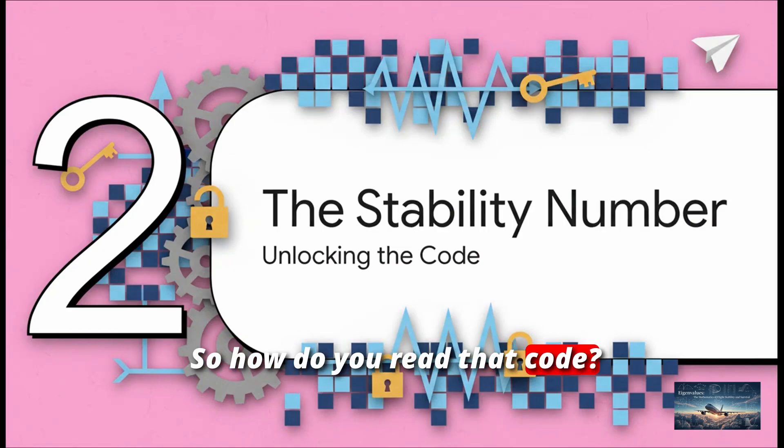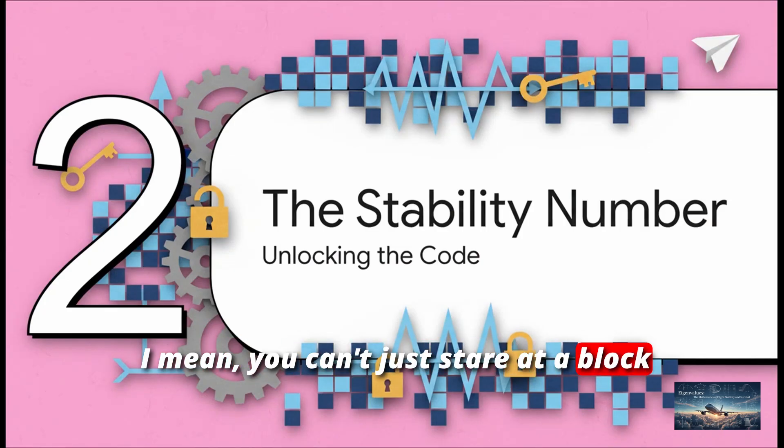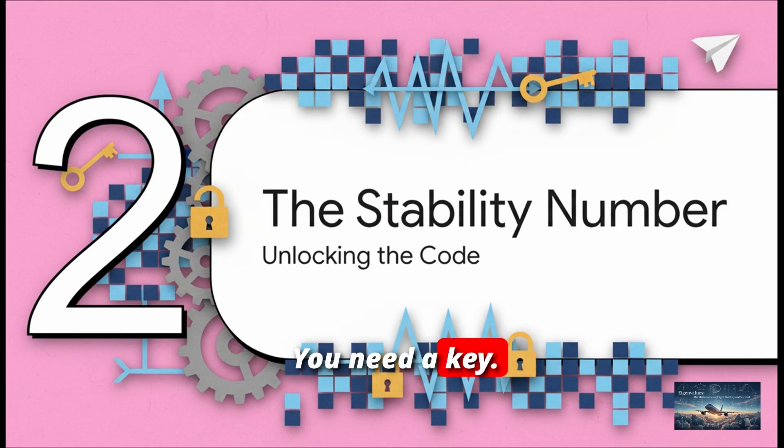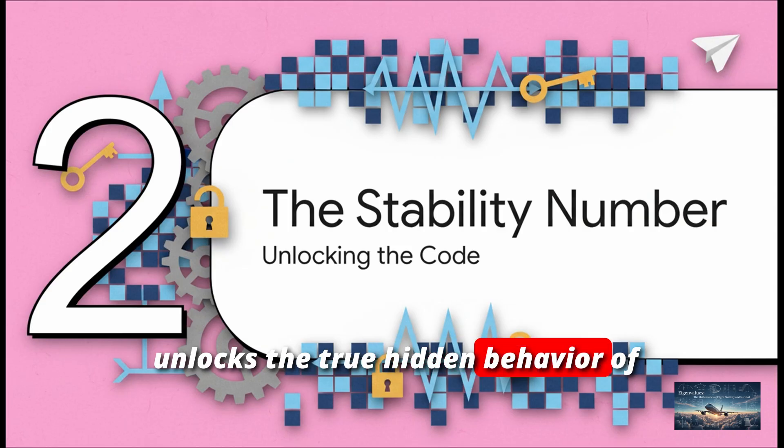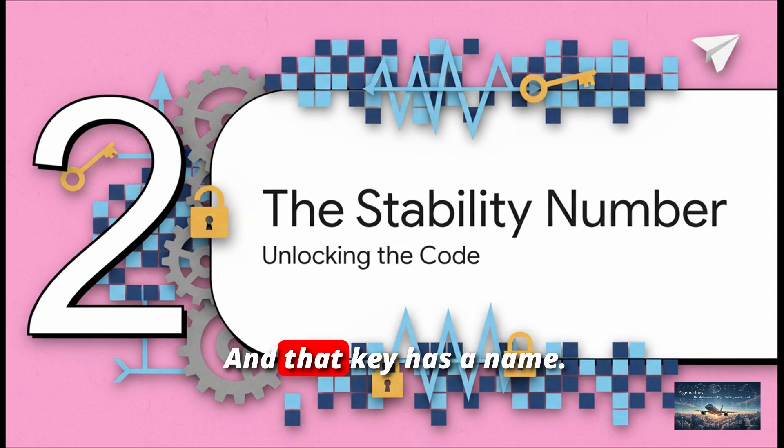So, how do you read that code? I mean, you can't just stare at a block of numbers and know what's going to happen. You need a key. You need a special kind of number that unlocks the true, hidden behavior of the whole system. And that key has a name. It's called an eigenvalue.